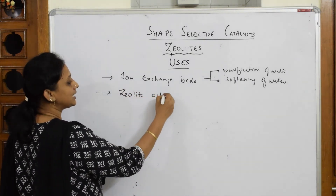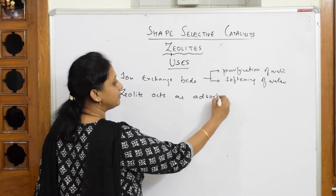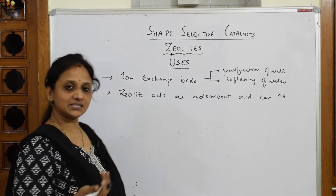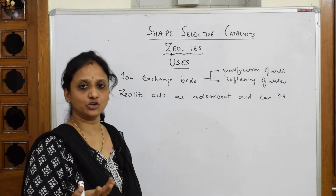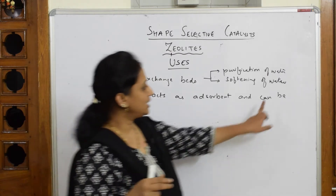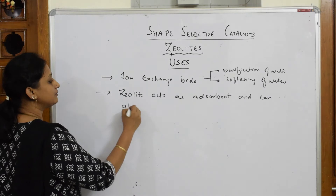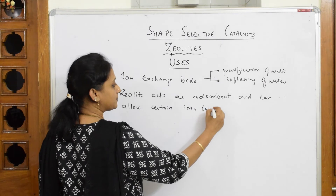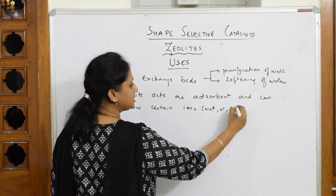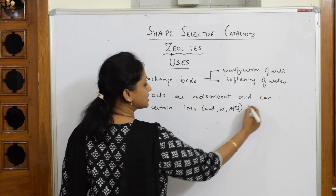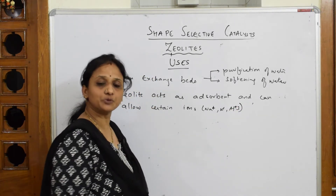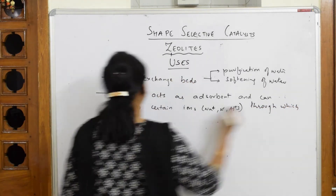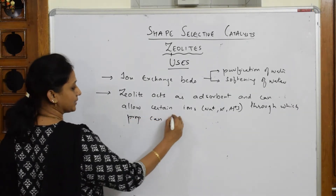Zeolite acts as an adsorbent and can allow certain ions — such as Na⁺ ions, K⁺ ions, and Al³⁺ ions — to occupy its sites, through which the properties of different elements can be studied.